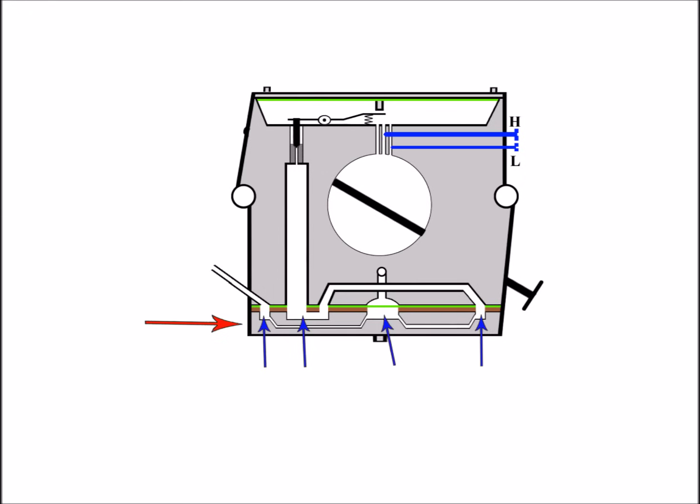Now what's important here is that these indentations are all compartmentalized and separated by the gasket shown in brown. And the only way these compartments are connected are through these fuel vanes shown in the blue arrows. These are also built into the cap.